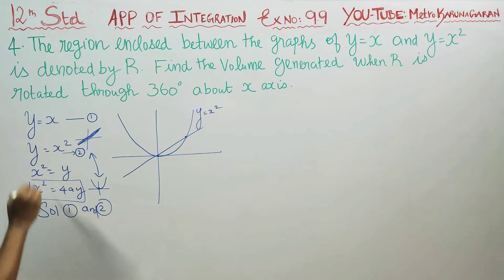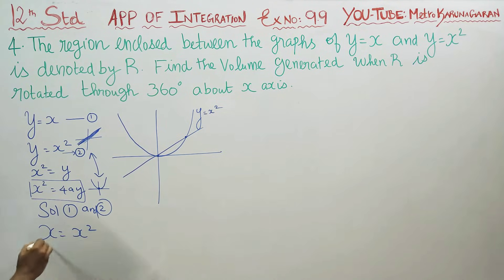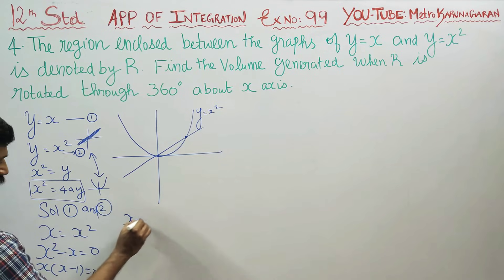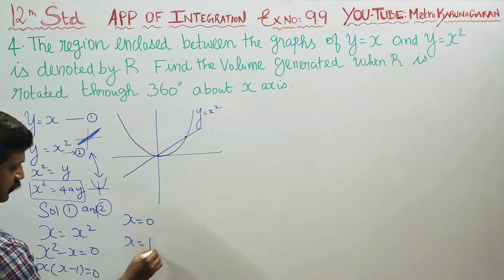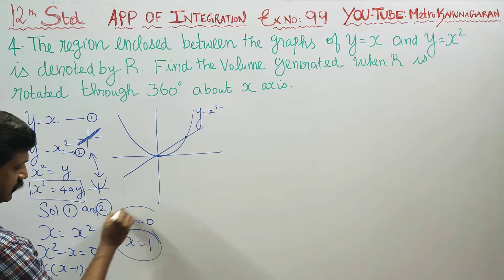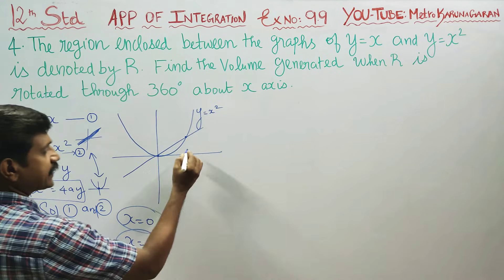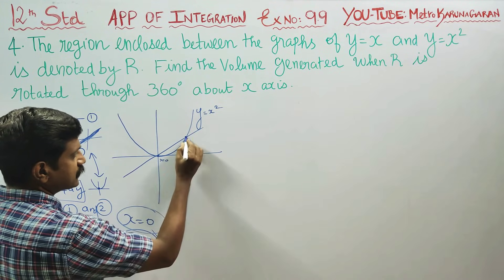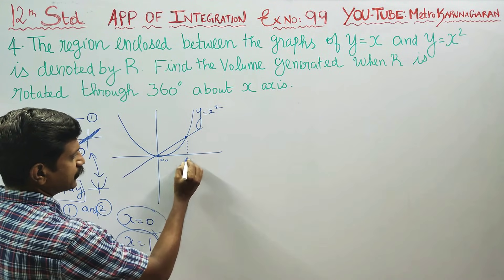Substituting y = x into y = x² gives x = x². Rearranging: x² − x = 0, so x(x − 1) = 0. Therefore x = 0 and x = 1. These give us the two intersection points at x = 0 and x = 1.